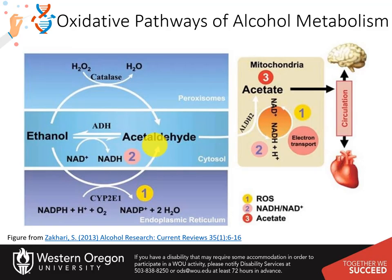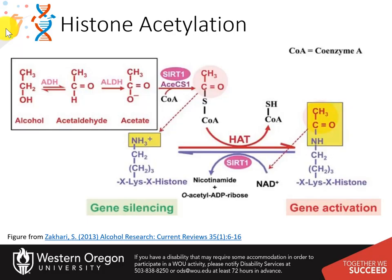The activity of CYP2E1 and catalase contributes to lipid peroxidation, DNA damage, protein damage, and so on. Gene regulation in other areas of the body is also affected in response to chronic heavy alcohol consumption.